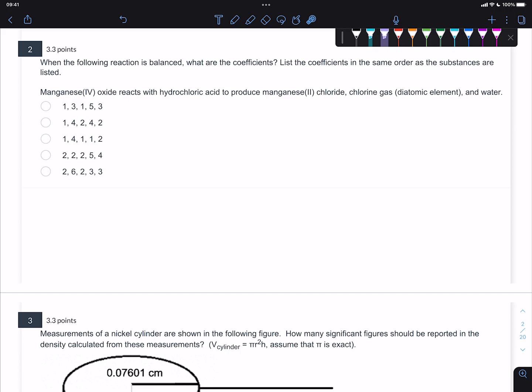Here's how I tend to teach people how to do these. First, you want to find all the main words and recognize that this is going to involve naming and balancing. And that's really important that you understand the naming system. So here we have an ionic compound, manganese(IV) oxide, and it reacts with hydrochloric acid to produce manganese(II) chloride, chlorine gas, which is a diatomic element. You do need to know your seven diatomics, as well as water.